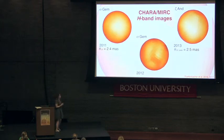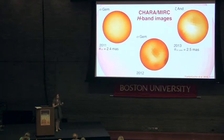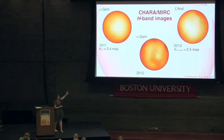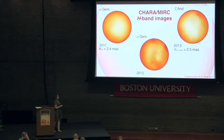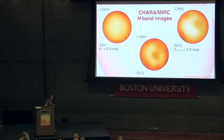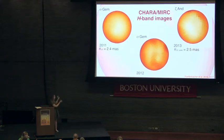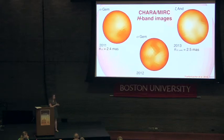These images as they appeared on the sky to MIRC in H-band show Sigma Gem in 2011 and 2012, and Zeta Andromedae in 2013. Looking closely at Zeta Andromedae, you can see the polar spot, and also the ellipticity of the star as it appears to breathe in and out on the side. The previous images were shown in temperature to emphasize the dynamic range of the surface.